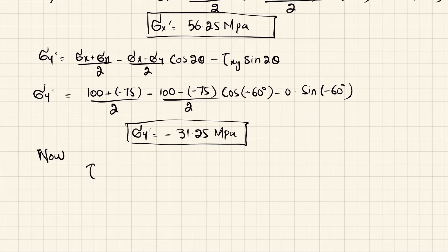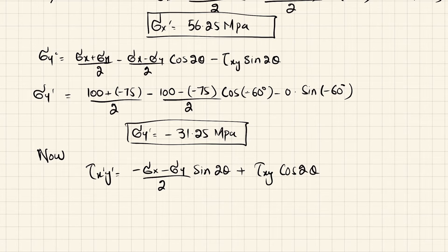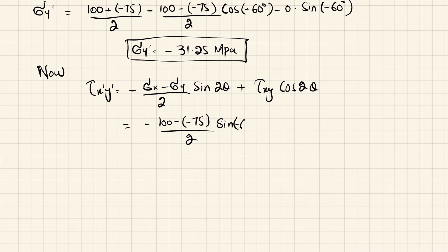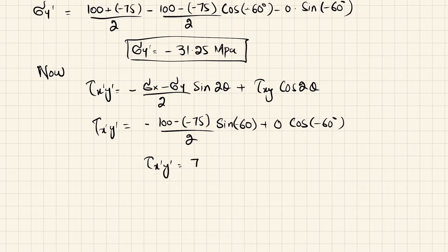Now we find the shear stress when the element is rotated 30 degrees clockwise. Tau x dash y dash equals minus (sigma x minus sigma y) divided by 2 times sin(2 theta), plus tau x y times cos(2 theta). Substituting: minus (100 minus minus 75) divided by 2 times sin(minus 60 degrees), plus 0 times cos(minus 60 degrees). Solving this gives tau x dash y dash equal to 75.8 MPa.